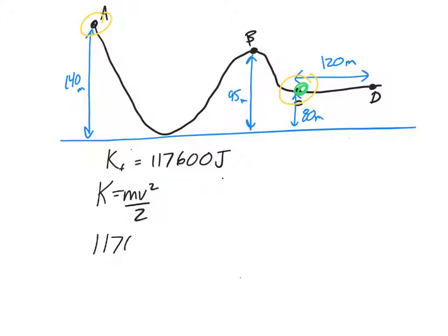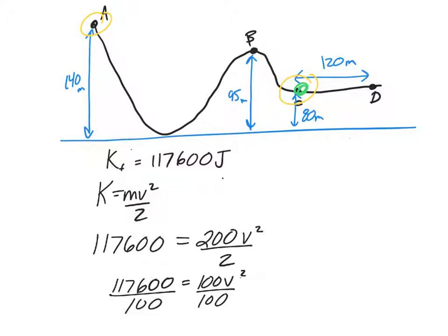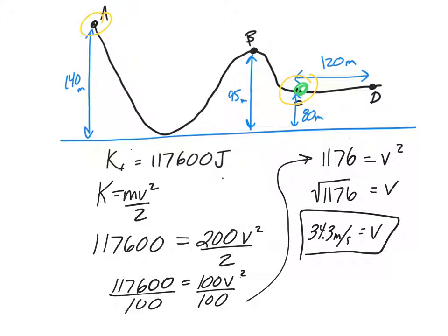So let's plug it in. 117,600 is equal to the mass was 200, velocity squared divided by 2. So I think the easiest way to do this guy would probably be to divide out 200 divided by 2 is 100 v squared. So you're going to divide by 100 on both sides, and that gets us 1,176 equals v squared. So we're going to take the square root, 1,176 equals v. I just recorded that without saying anything, sorry. So I had 1,176 is equal to v squared, so I took the square root to get that, and I got 34.3 meters per second. It's really fast.